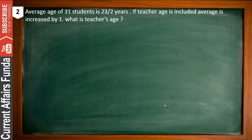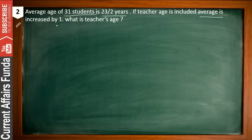Now let's see the second problem. The average age of 31 students is 23.5 years. If the teacher's age is included, the average is increased by 1. What is the teacher's age? This is a very similar problem to the previous one. Pause the video and solve it by yourself first.